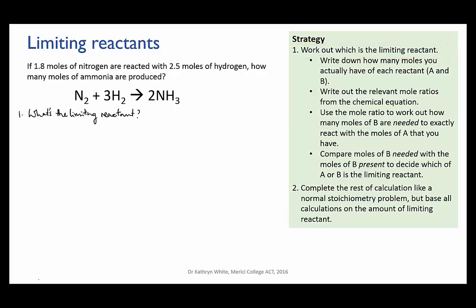Remember once the limiting reactant runs out the reaction stops and no more product is made. So if we're to calculate how much ammonia is made we first need to know which reactant is going to run out first. I've sketched the strategy for doing this here and I'm going to work through it.